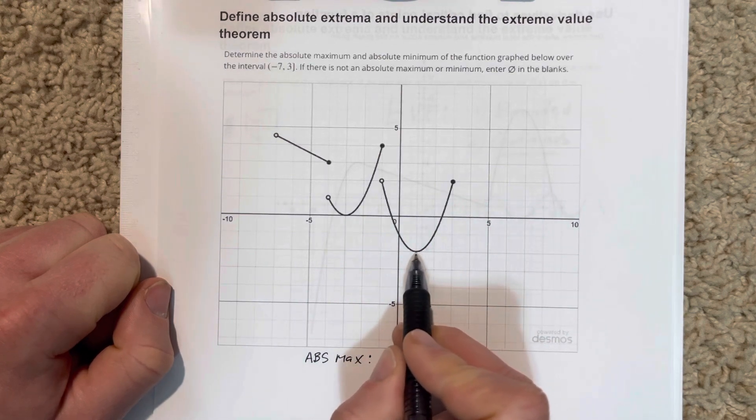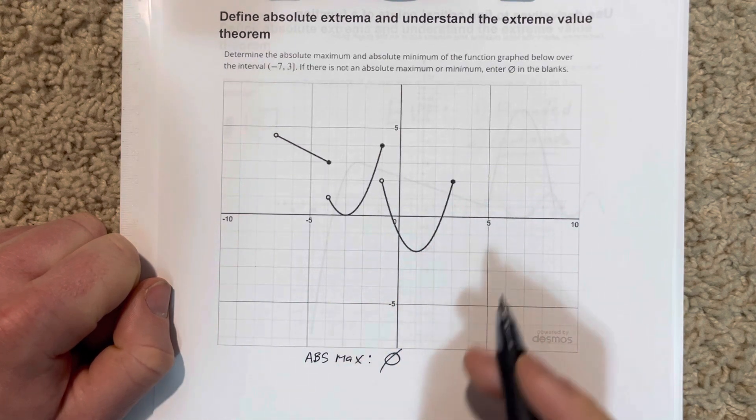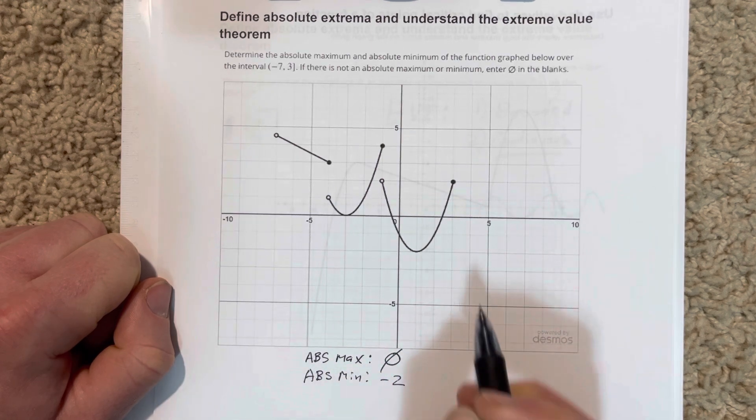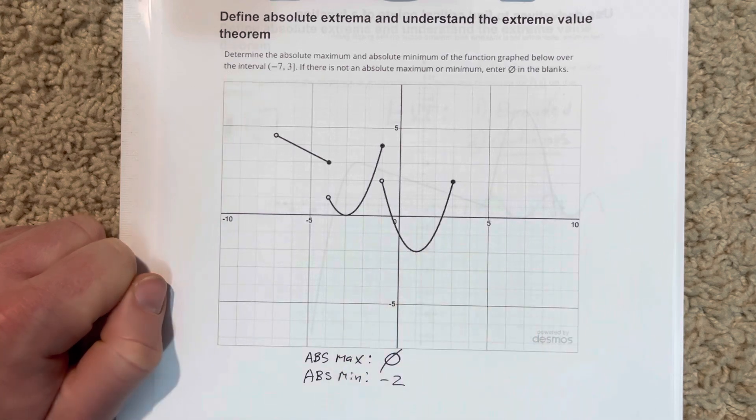And you can see that right here. That's at negative 2. So we're going to say absolute min is negative 2 because that's the lowest point in the graph, and you can see that easily.